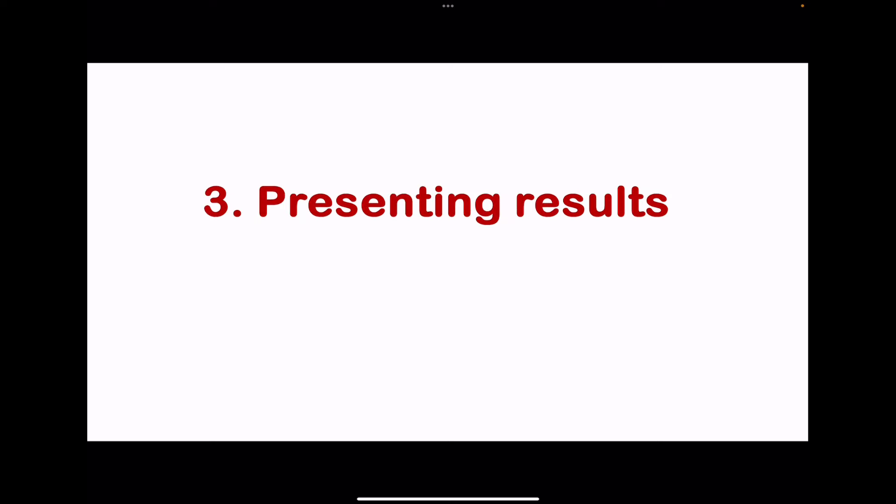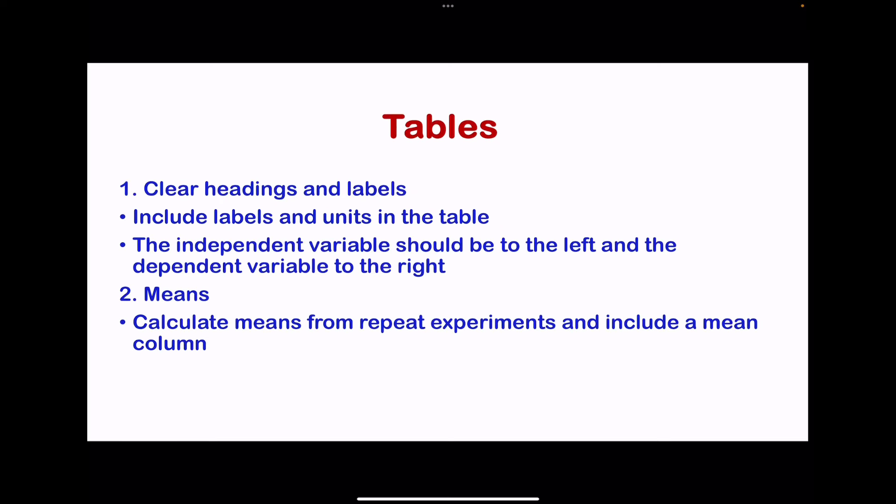Moving on to how results should be presented. Results can be presented in tables and graphs. The table should have clear headings and labels, include units, and ensure the independent variable is to the left while the dependent variable is to the right. Also include a column for means, since means calculated from repeat experiments are recorded in the table. Anomalous results can be excluded when calculating the mean.